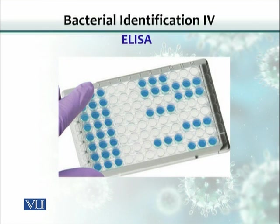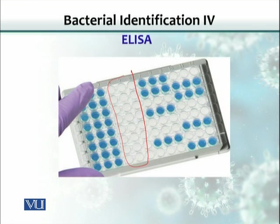This is an actual ELISA plate showing the results. The wells that are blue in color are positive, indicating the target antigen or antibody was detected, while the wells showing no color are negative. This illustrates how, although antigen-antibody interactions are invisible on their own, modifying the system with probes such as radioisotopes or enzymes allows us to visualize the results.